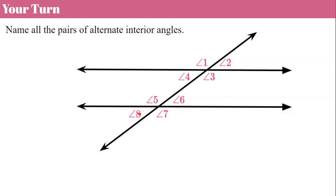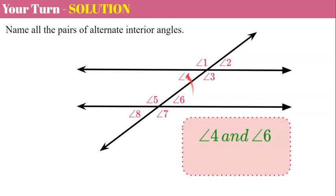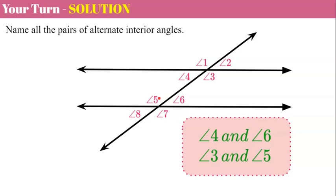Your turn again — pause and identify the pairs of alternate interior angles. Welcome back. Angle 4 and angle 6 are interior angles on the inside of the parallel lines and on alternate sides — angle 4 on the left, angle 6 on the right of the transversal. We have one more pair: angles 3 and 5. They are both interior angles, on alternate sides of the transversal, making them congruent.